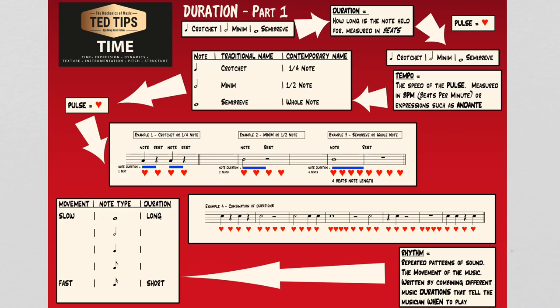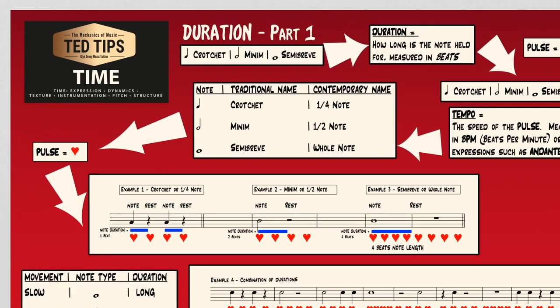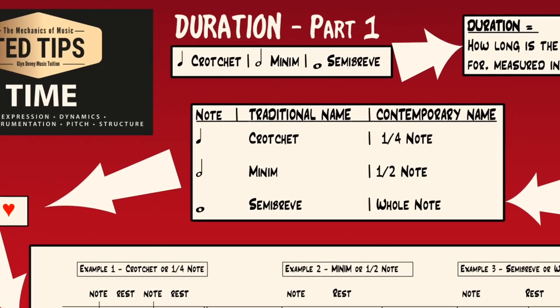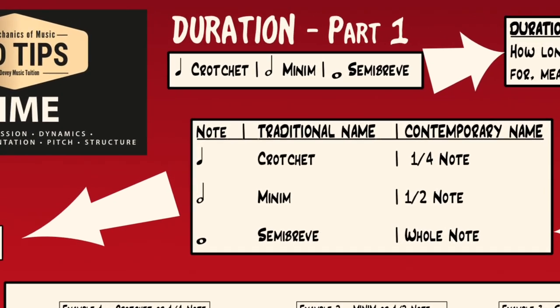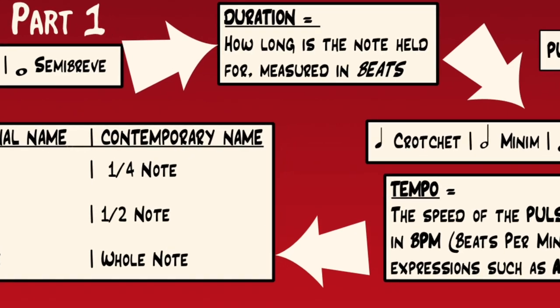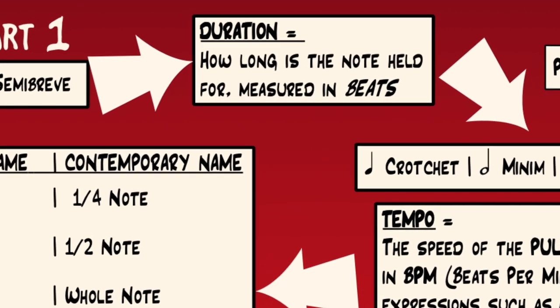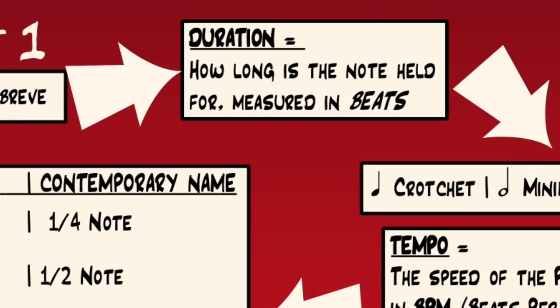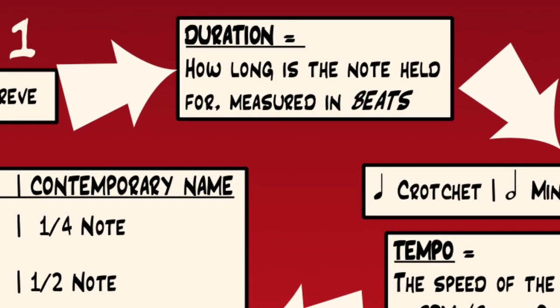In this video we'll look at three types of note duration: the crotchet, the minim, and the semibreve. Don't let the name scare you — the concept is much easier than the name.